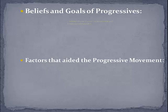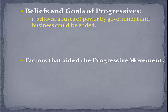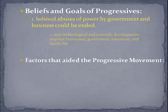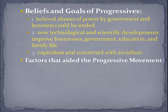Let's get into some beliefs and goals of the progressives. They believed that abuses of power by the government and businesses could be ended — so those monopolies could be ended, and abuses of power by people like Boss Tweed could be ended as well. They also believed that scientific and technological developments could improve businesses, government, education, and family life. They were very focused on capitalism and improving capitalism, and many of them were wary of a growing movement called socialism.